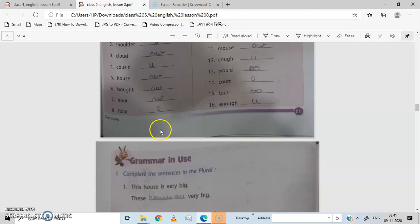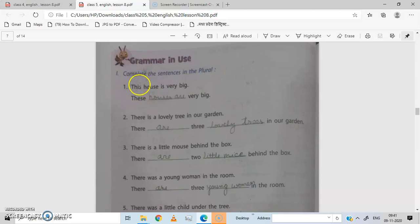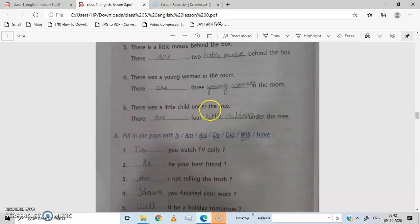Move on to the next exercise. Grammar in use. Complete the sentence in the plural. Change the singular sentence to plural. There is a lovely tree in our garden becomes there are three lovely trees in our garden. There is a little mouse behind the box becomes there are two little mice behind the box. There was a young woman in the room becomes there are three young women in the room. There was a little child under the tree becomes there are four little children under the tree.